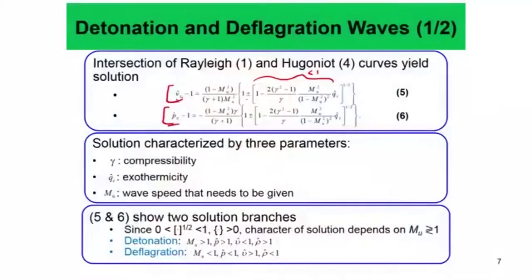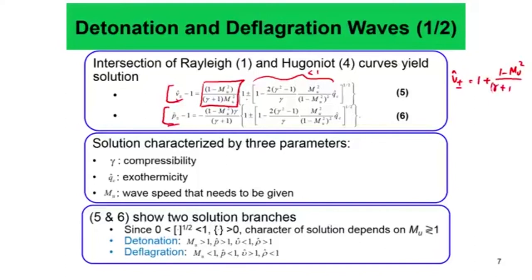The sign of v_cap minus 1 is essentially only given by this part, that is 1 minus mu-squared. This is very very important, because then you can write — just to determine the sign — that v_cap plus or minus 1 is equal to 1 plus essentially 1 minus mu-squared times gamma plus 1 times mu-squared.